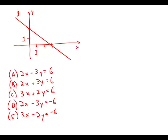In the coordinate system, which of the following is the equation of line L? Well, first of all we notice that L goes through this point here which is (3,0) and it goes through this point here which is (0,2).